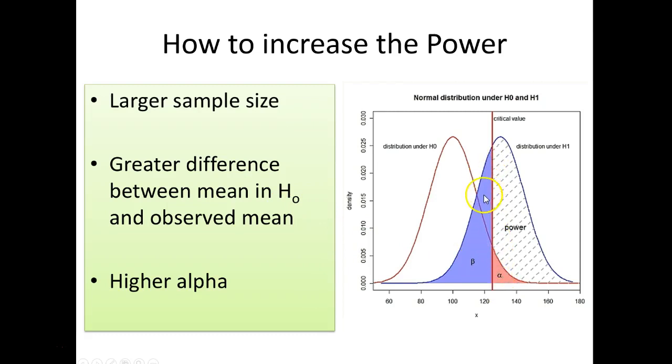This is, we can say, our distribution for our null hypothesis. That would be the old machine that we were using. This is the distribution for the new machine that we know in truth secretly is better. If there was a bigger difference between these means, this right here, the second normal curve, would shift over and beta would shrink.